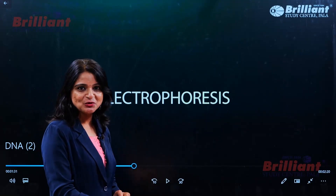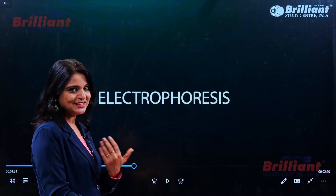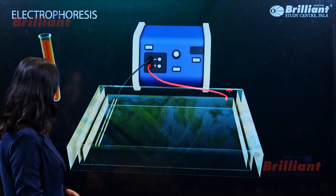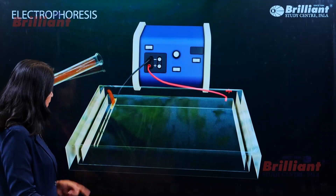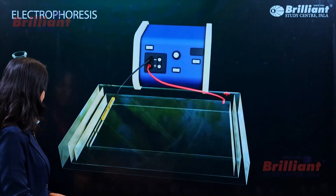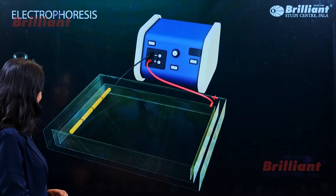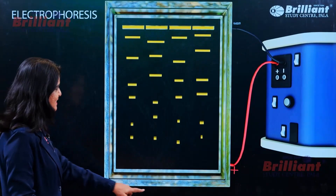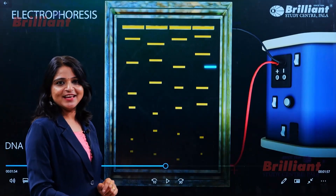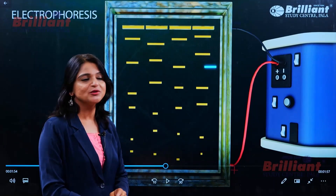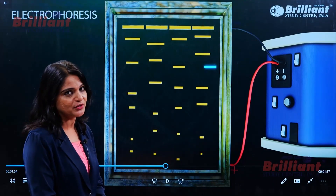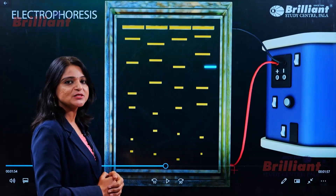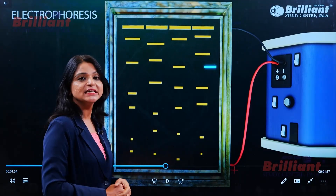Now we are going to separate these fragments by electrophoresis. Look how electrophoresis works — this is the electrophoretic apparatus and we are loading DNA into the wells. We switch on the electric current, and DNA starts to migrate from the negative electrode to the positive electrode. Smaller fragments are found near the positive electrode, while larger fragments remain near the well or the negative electrode.